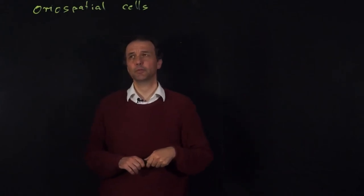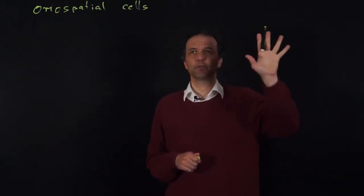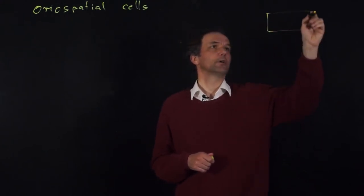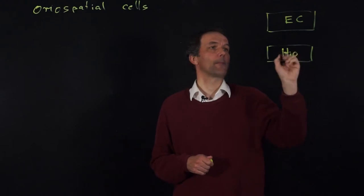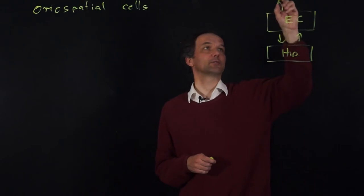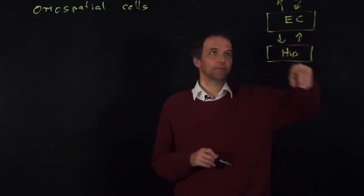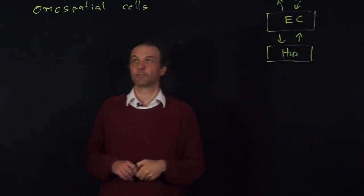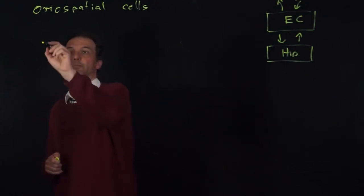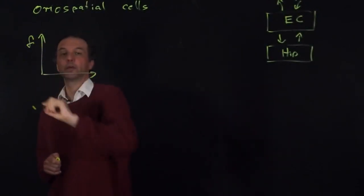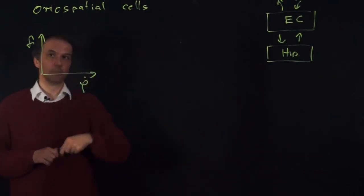The first type of cell I want to talk about are the angular head velocity cells. For the purpose of this tutorial, it's sufficient to think of the entorhinal cortex and the hippocampus as structures that talk to each other, with the rest of the brain outside. Angular head velocity cells are found outside of this entorhinal cortex-hippocampus formation, and they respond to the angular head velocity. If you plot the firing rate as a function of angular head velocity, there are different types of cells.